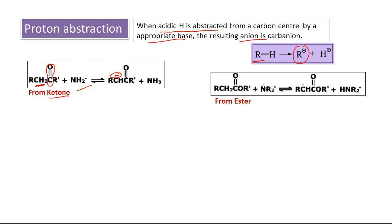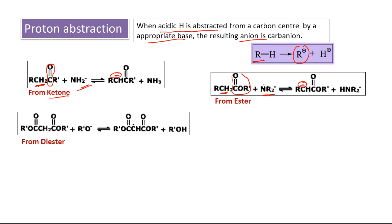The starting material may also be an ester, because the COOR group is also electron-withdrawing. Here we have taken NR₂⁻ as base — negative charge over nitrogen, with two alkyl groups replacing the hydrogens. This NR₂⁻ acts as a base and takes a proton from the alpha carbon, giving a carbanion. The starting material may also be a diester — two ester groups on both sides with a methylene CH₂ group. This hydrogen is very acidic because both sides have electron-withdrawing groups. A base such as RO⁻ (MeO⁻ or EtO⁻) abstracts the hydrogen, generating a carbanion.